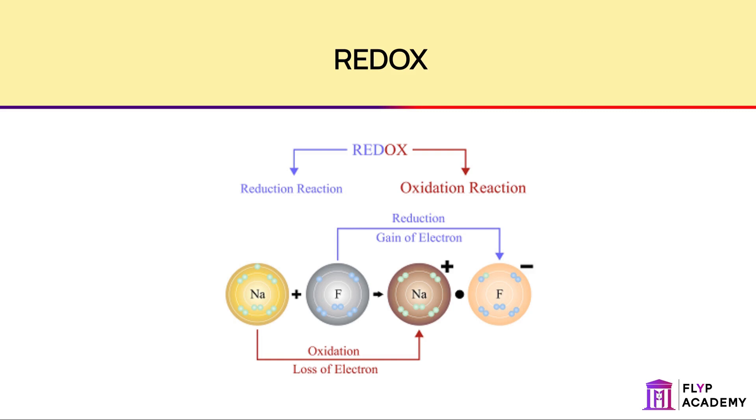Halogens are typical examples for these, as they have 7 outer shell electrons and they need only one more to reach the stable structure. As halogens are easy to be reduced, they are strong oxidizing agents. In general, the reactivity of halogens decreases with increasing mass. If we want to express it with oxidizing ability, we can say that the oxidizing ability decreases with increasing mass.